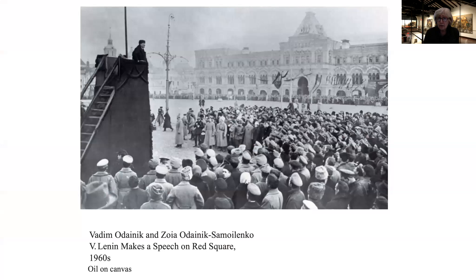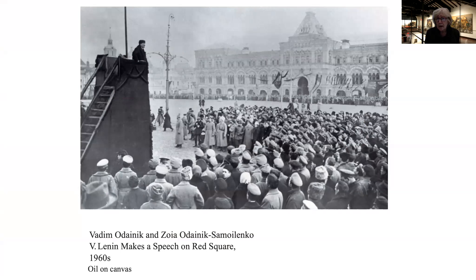Here is a photograph of the actual meeting. You can see Lenin's podium looks remarkably similar to the painting, and we can still see the church in the background. But the crowd looks a little different — there are a lot more military, since the civil war was going on, and not so many of the common folk that the artist chose to put in his painting.